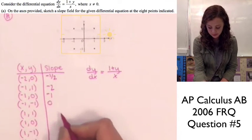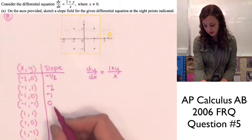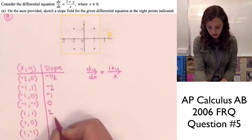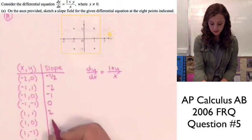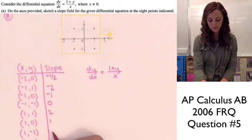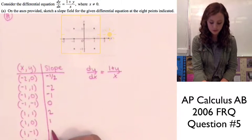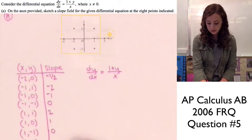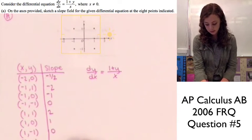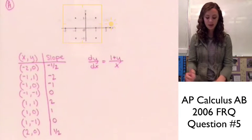When x = -1 and y = -1, we have a slope of 0. For x = 1 and y = 1, we have a slope of 2. For x = 1 and y = 0, we have a slope of 1. For x = 1 and y = -1, we have a slope of 0. And for x = 2 and y = 0, we have a slope of 1/2.